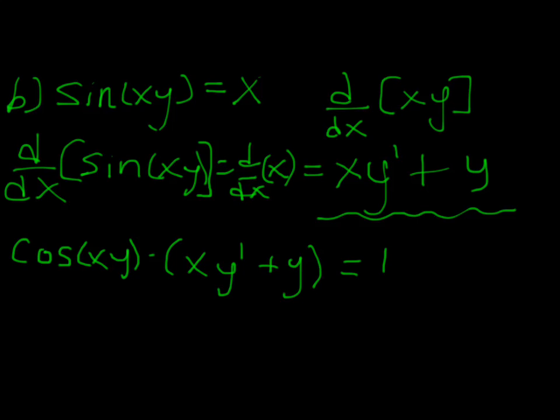So now what we do is, like I said before, we want to get this in terms of y prime. So the easiest thing for us to do first here might be just to get rid of that cos xy. So just divide both sides by cos xy. Here we go.